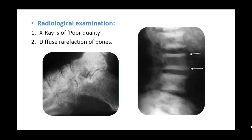Radiological examination: The X-ray of a patient shows very poor quality images because there is less calcium and less mineralization of the bone and osteoid. This lack of mineralization gives a glossy or hazy appearance. There is diffuse rarefaction of the bone, with no well-defined clear-cut margins.